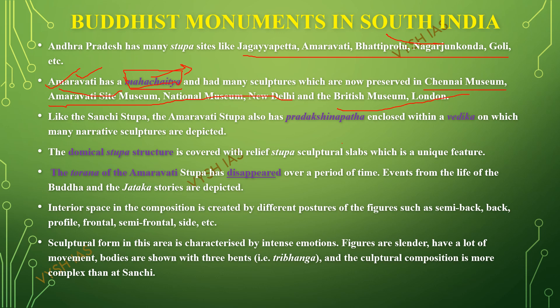The Amaravati Stupa also has a pradikshnapatha — the circumambulatory path around the stupa — enclosed within a vedika, which is like a compound wall, decorated with toranas. These walls have narrative sculptures depicted on them, and the domical stupa structure is covered with relief and sculptural slabs, which is a unique feature of this stupa. The torana of Amaravati has disappeared over a period of time.